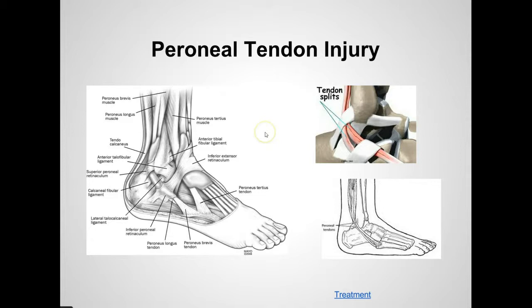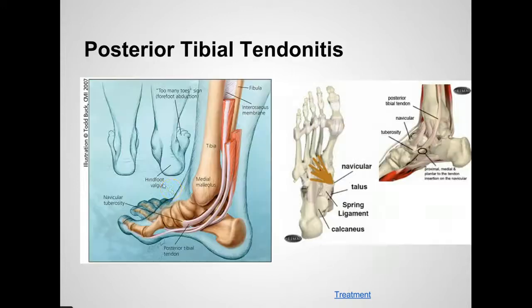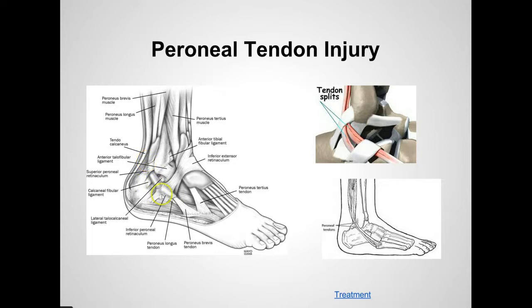Now looking at peroneal tendon injuries — people think it's their ankle that hurts, but a lot of times there are tendons that can be the source. The tendons on the outside of your ankle are called the peroneal tendons. Here you can see the peroneus brevis, and there's also the peroneus longus that runs underneath it. The peroneus brevis inserts at the base of the fifth metatarsal, and the peroneus longus goes underneath the foot. These are typically torn around the ankle ligament, so if you sprain the anterior talofibular ligament or the calcaneal fibular ligament, the next structure to be torn would be the peroneal tendons. They may need to be re-sutured or corrected to make them function properly.